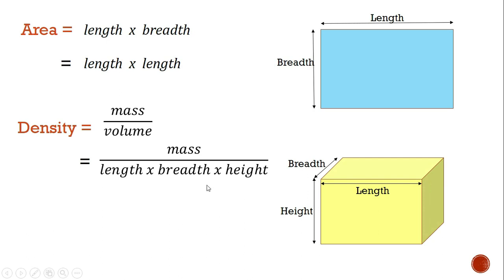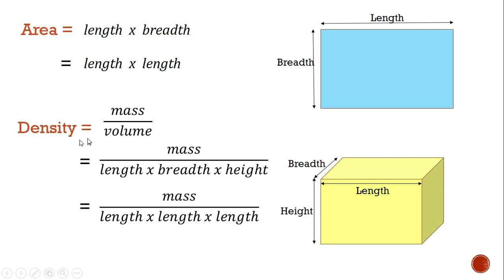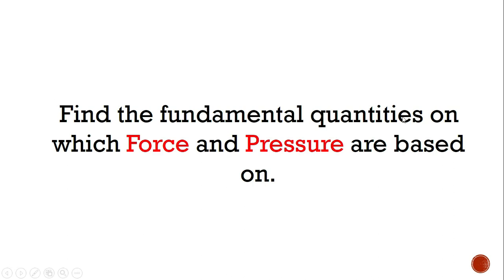So we can rewrite the density formula in terms of its fundamental components and see clearly that density depends on four different physical quantities: mass and the three dimensions of the box. Thus density is also a derived quantity. I hope you understood the topics discussed today. As homework, try to find out all the related fundamental quantities that force depends upon. We'll meet again in the next class to discuss these questions. Till then, take care and be safe. Thank you.